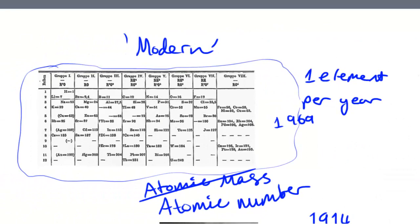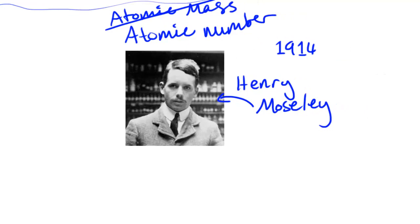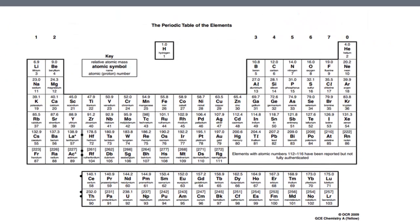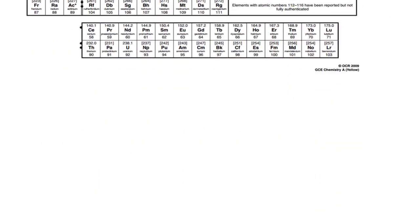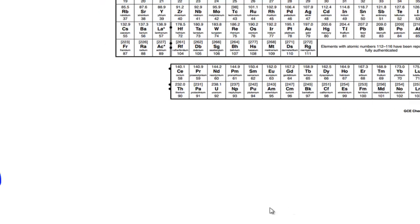It's pretty much the model we have here, maybe minus a few undiscovered elements at that time. This was a very big step forward in chemistry because now we had a periodic table which really did show the trends very well. Moving on from Henry Moseley, I had a picture of Glenn Seaborg here but it seems to have disappeared.